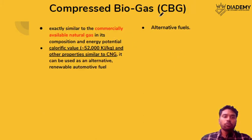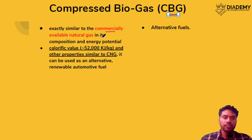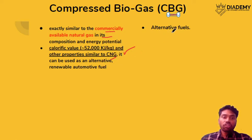The next topic is compressed biogas, which is very similar to CNG. Its energy potential is nearly 52 kilojoules per hour, very close to that of CNG. This is important in the context of alternate fuels, as it can reduce our dependency on petrol and diesel.